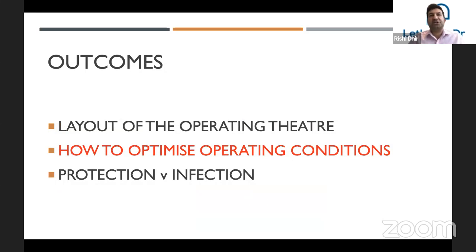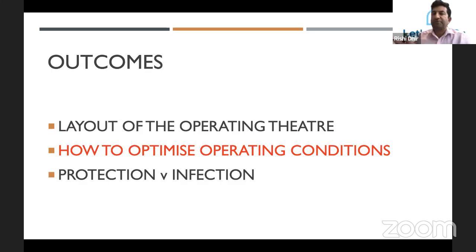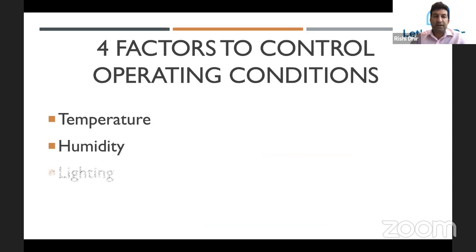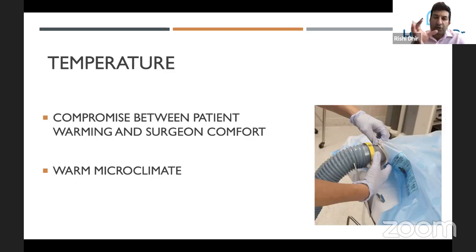As a surgeon, how can we optimize operating conditions? There are two factors to consider: optimum comfort for us as surgeons to operate in, and the needs of the patient. There are four factors which we can control: temperature, humidity, lighting, and ventilation. Starting with temperature — there is always a compromise. The payoff is between ensuring adequate comfort for the surgeon — ideally about 19 degrees because we have gowns on and it gets quite hot — versus the patient, who is paralyzed, has an exposed wound, and may be given cool fluids.